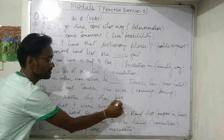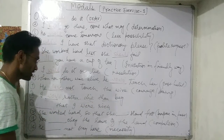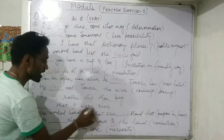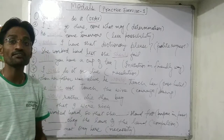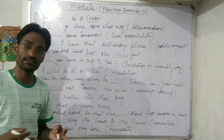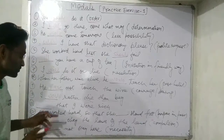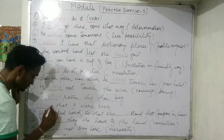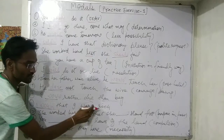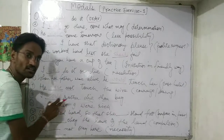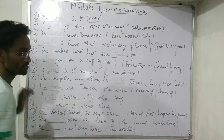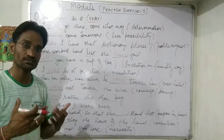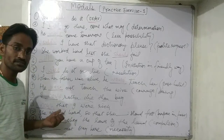Next: 'That I were rich' — this means 'I wish I were rich.' For this, we use 'would that.' So: 'Would that I were rich.' 'Would that' means 'I wish' — it expresses a wish or desire that cannot be fulfilled.